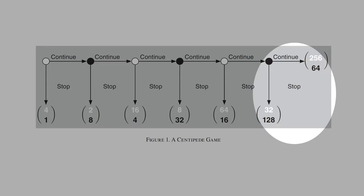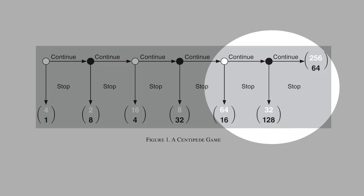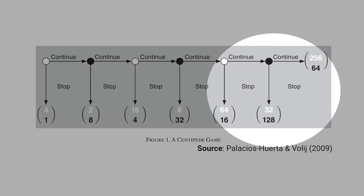Therefore, it's irrational for the black player to continue. The white player knows this using backward induction. Therefore, from the perspective of the white player, it's irrational to expect to receive $256. The white player has no incentive to continue, because it's better to stop and receive $64 than to continue and receive $32.